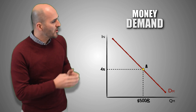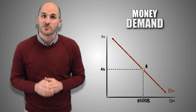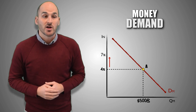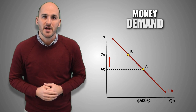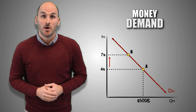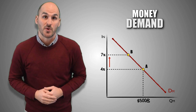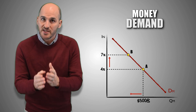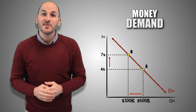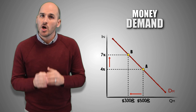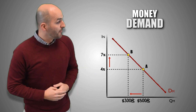For example, assume that at a nominal interest rate of 4%, consumers and other borrowers demand 500 billion dollars. If the nominal interest rate climbs to 7%, consumers and borrowers are either less willing or less able to demand the same quantity of money because it is more expensive to use. This results in a decrease in the quantity of money demanded to 300 billion dollars — a movement along the money demand curve from point A to point B.